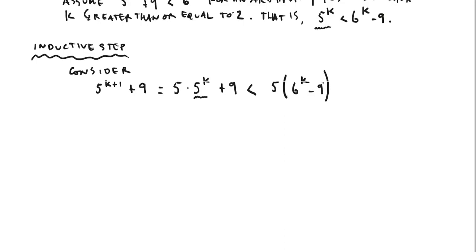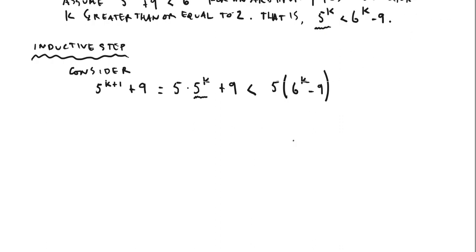So now as I work through this inductive step, let me distribute this 5. When I do, the quantity that I'm getting is going to be equal to the quantity I have right now. So if I distribute that 5, I get 5 times 6 to the k minus 5 times 9. That's obviously equal to 5 times 6 to the k minus 45.